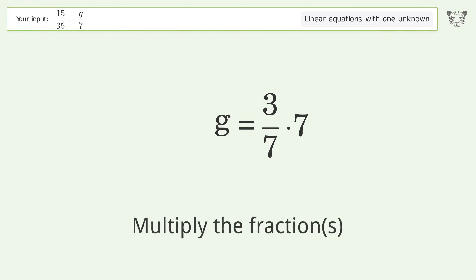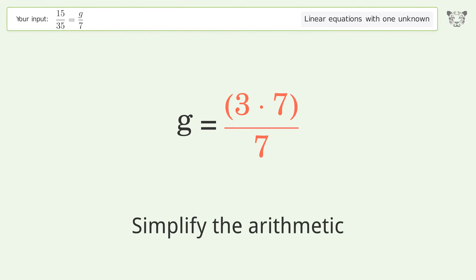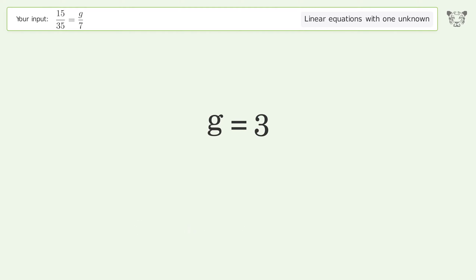Simplify the fraction. Multiply the fractions. Simplify the arithmetic. And so the final result is g equals 3.